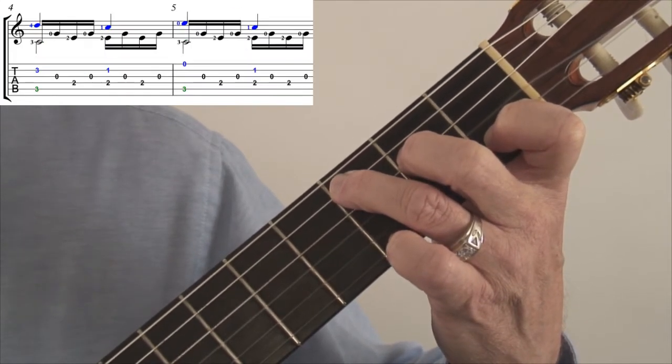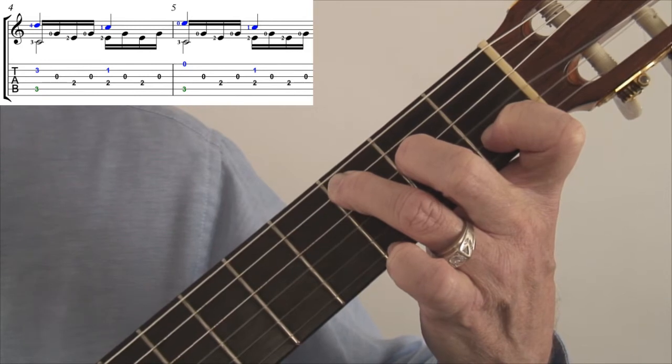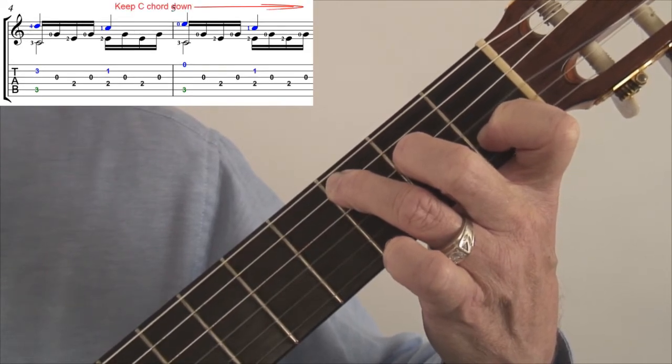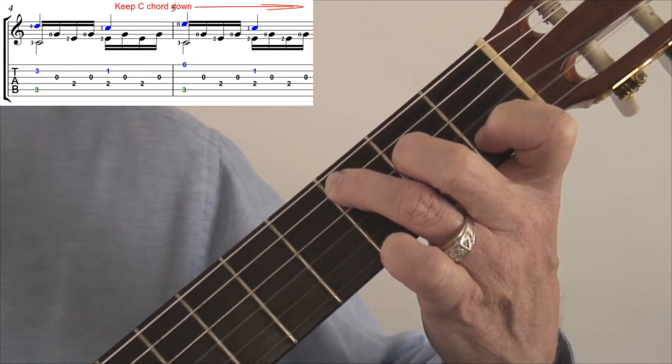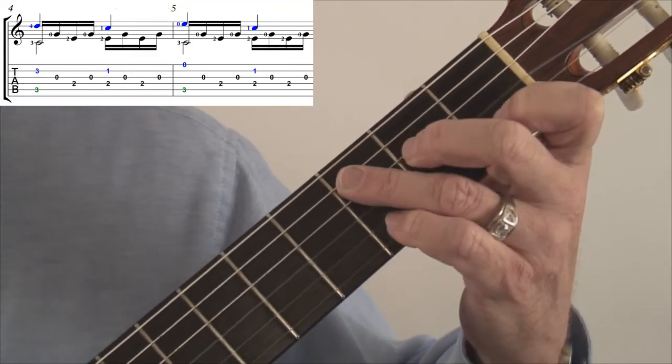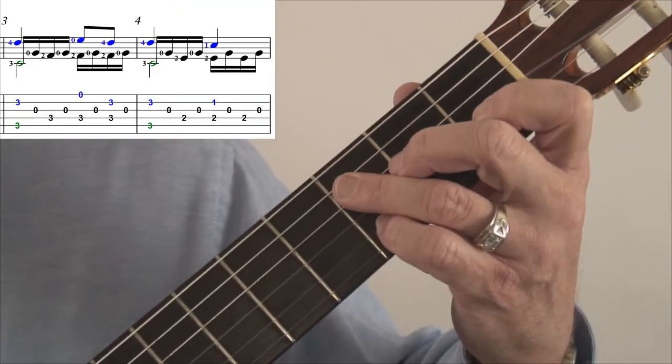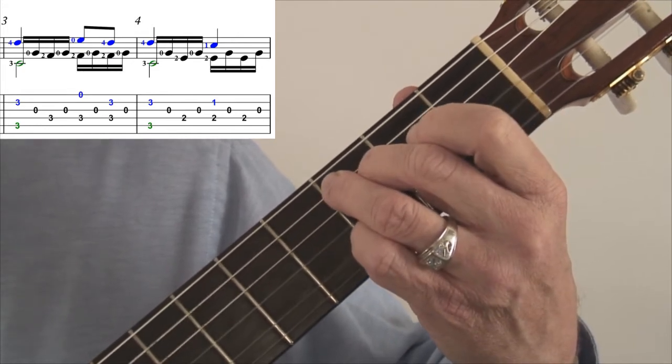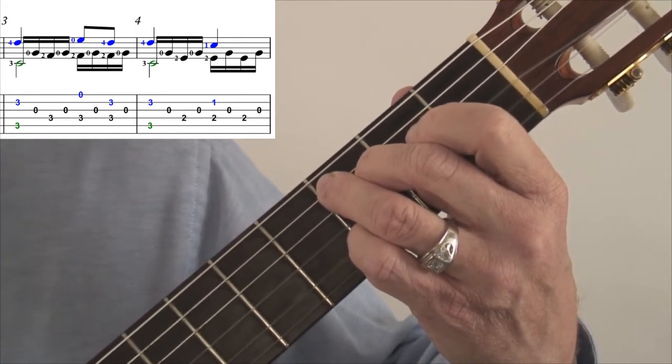And then when you go on to measure five, you've got a C chord down at the end of measure four. Just leave it there. And you're all set to play measure five. And on measure three, once again, we have potentially dissonant notes.